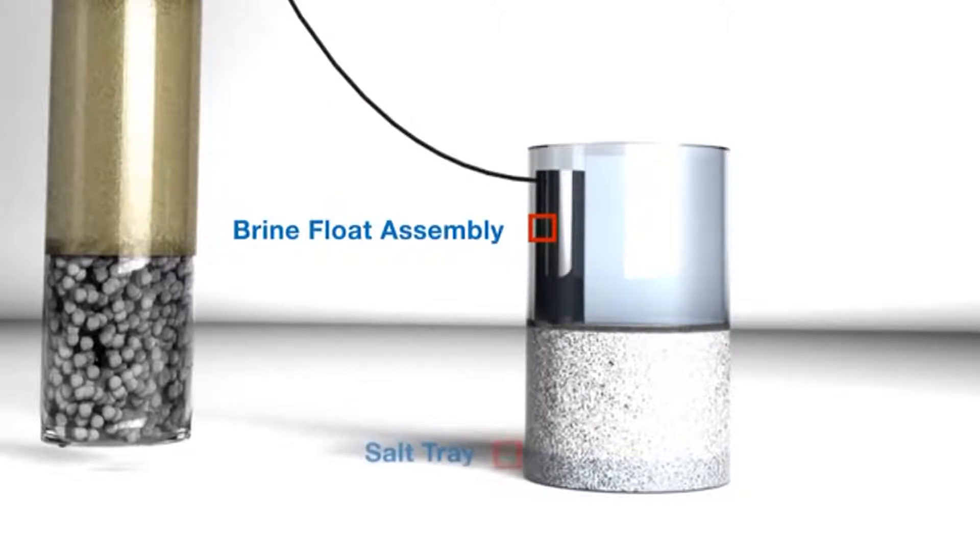The next element at the bottom of the tank is the salt tray. This tray has holes so that the salt will not bridge. Bridging happens when the glue in the salt forms a kind of crust or false top.